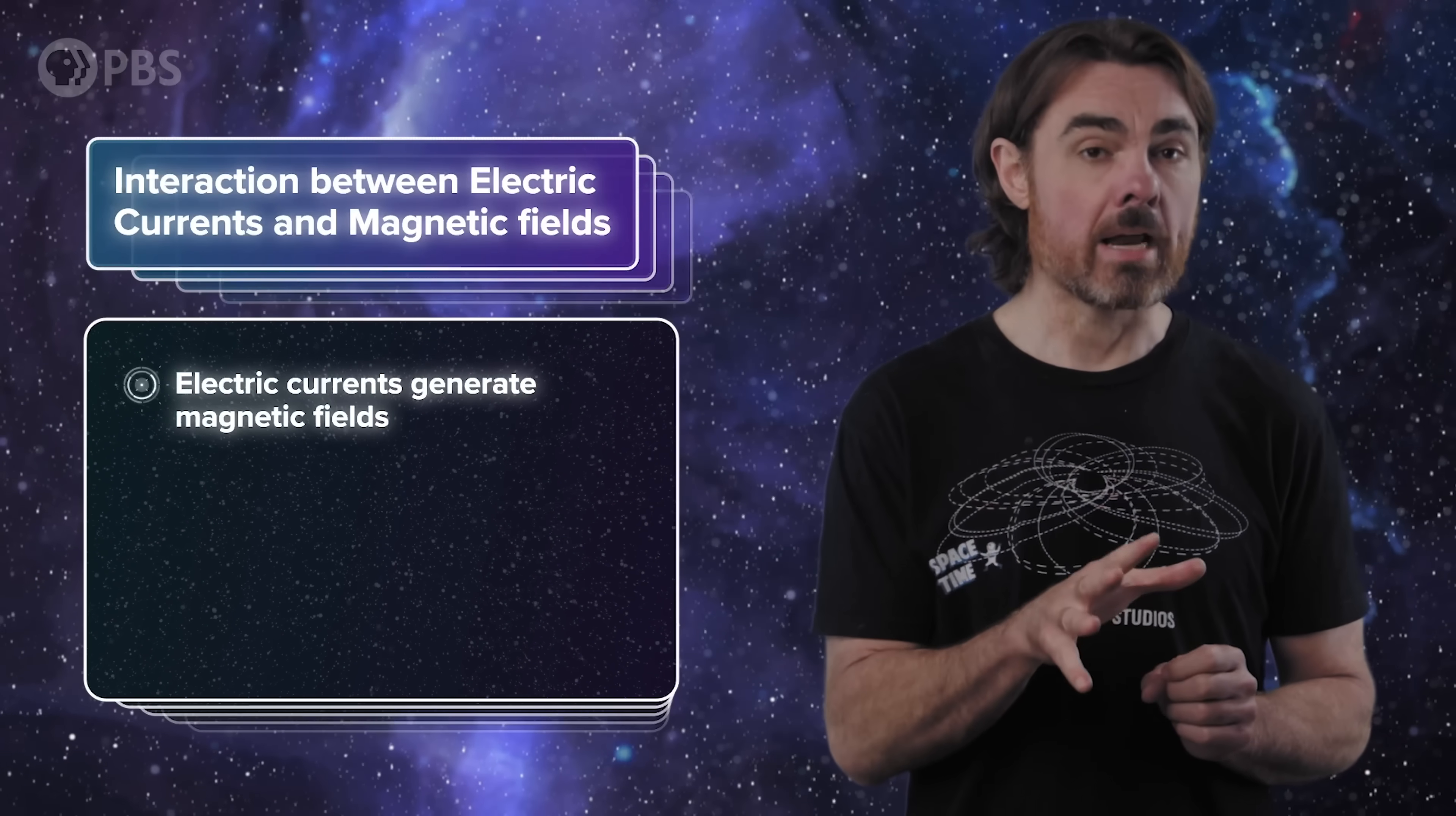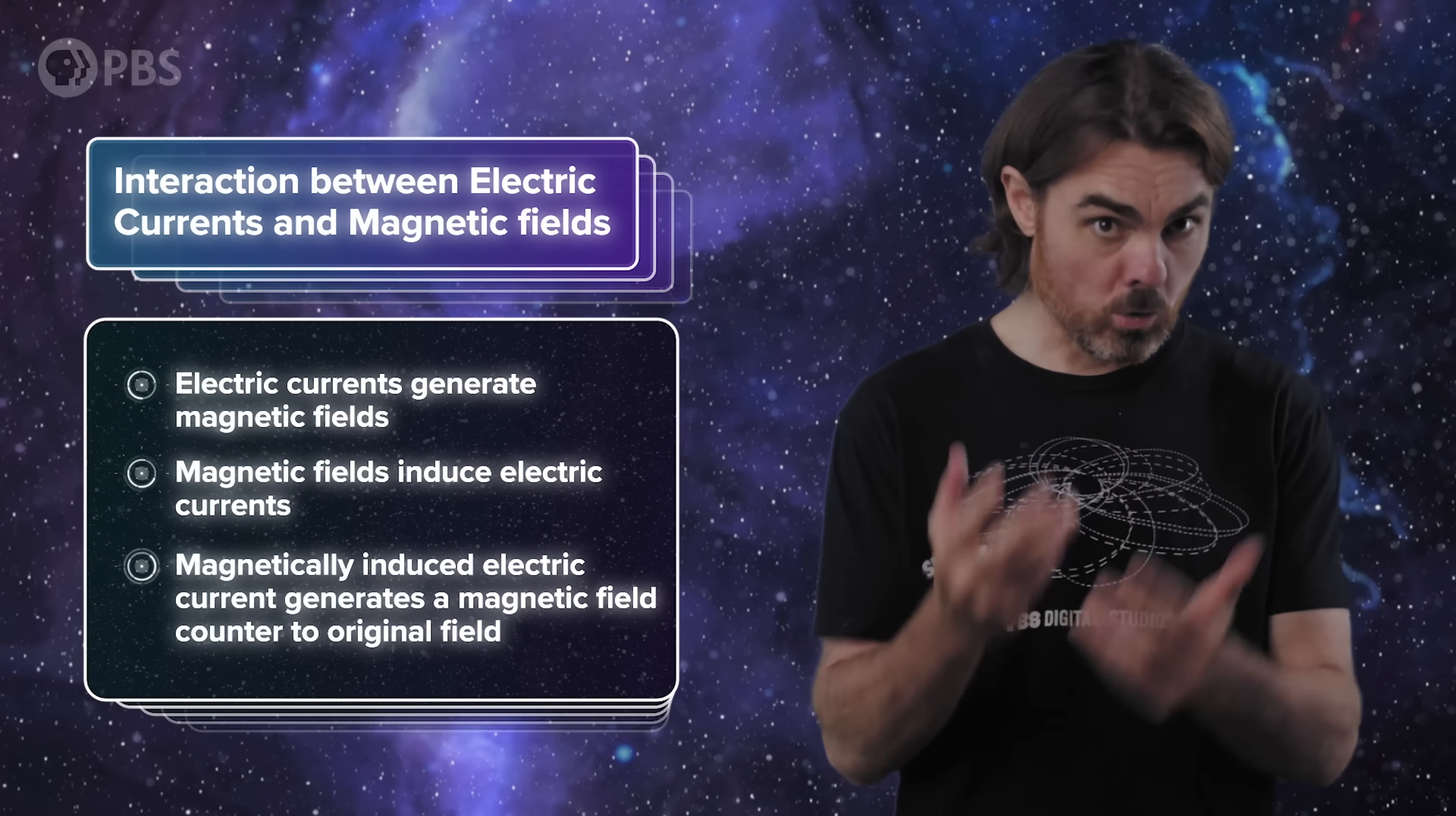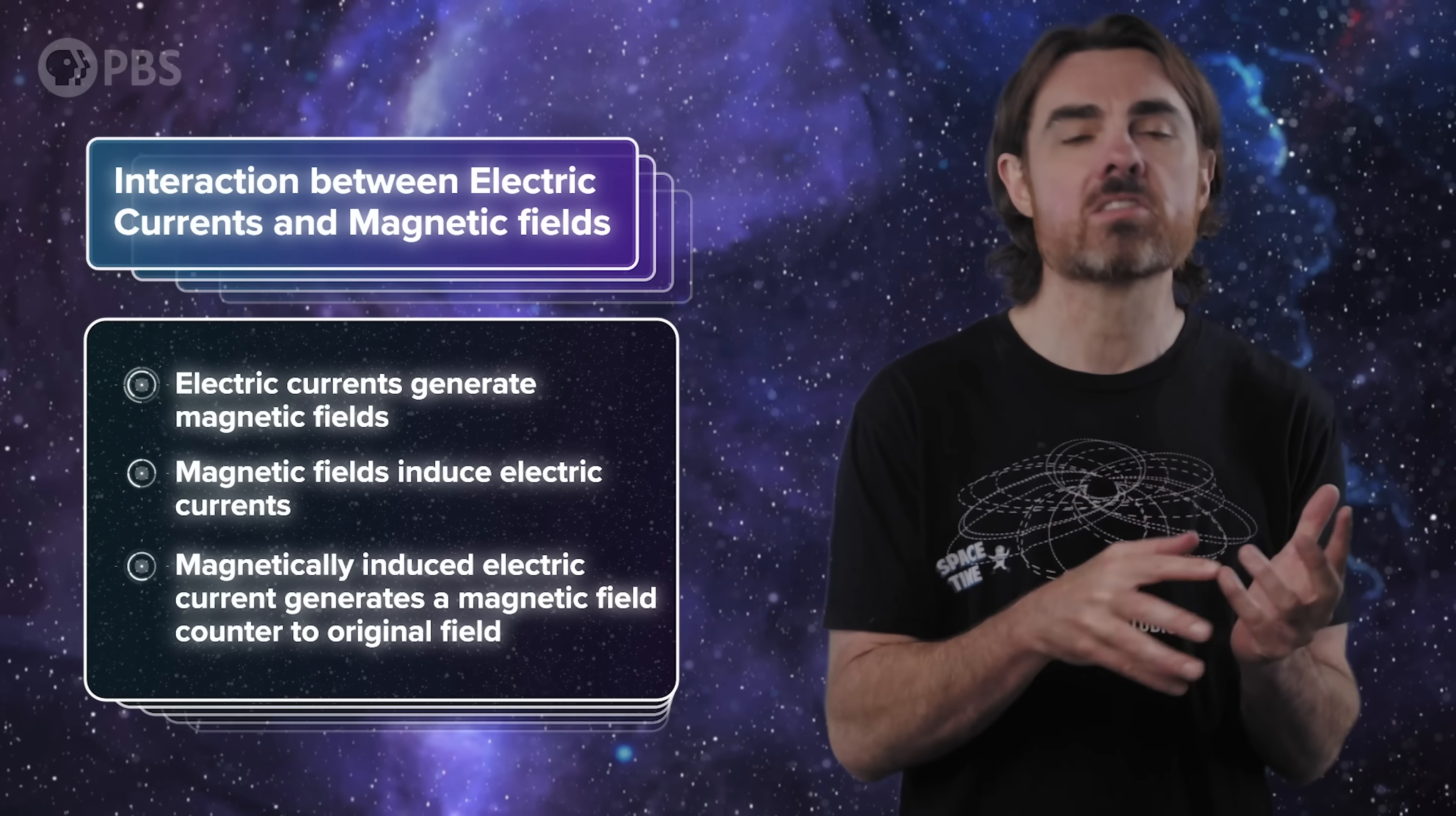Okay, so what's really happening here? We can predict what'll happen to a superconductor inside a magnetic field if we know just a few things. 1. Electric currents generate magnetic fields. 2. Magnetic fields also cause electric currents. And 3. The electric current caused by a magnetic field will itself generate another magnetic field that works to counteract the original field.